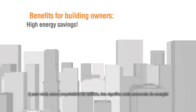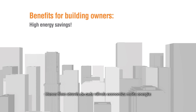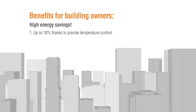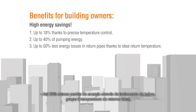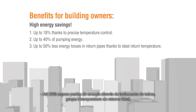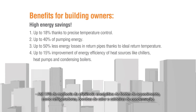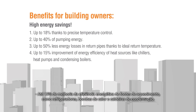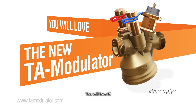And for you as a building owner, this means high energy savings. Less flow through each valve saves a lot of energy — up to 18% thanks to precise temperature control, up to 40% of pumping energy, and up to 50% less energy losses through pipe insulation thanks to ideal return temperature. Up to 15% improvement of energy efficiency of heat sources like chillers, heat pumps and condensing boilers. Discover the new TA modulator. You will love it.